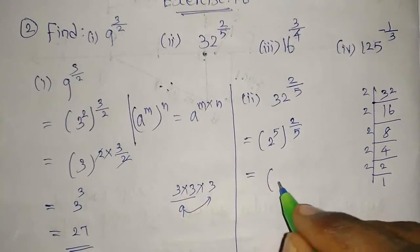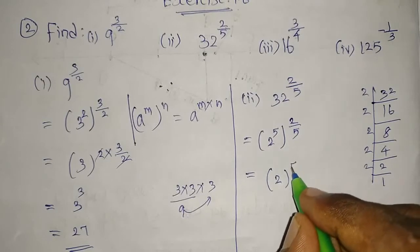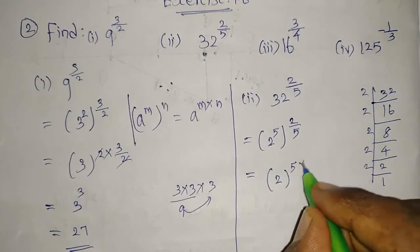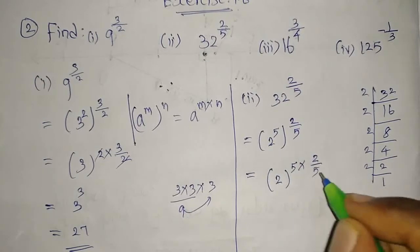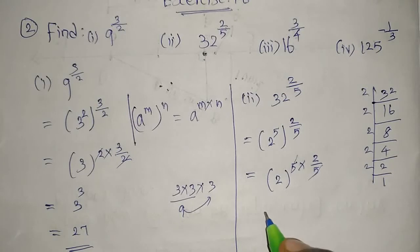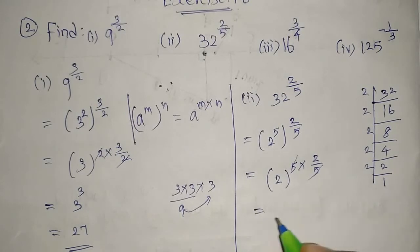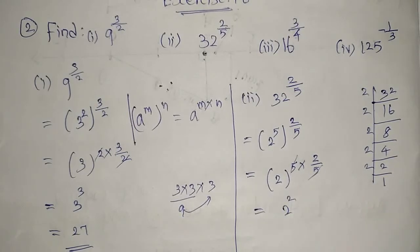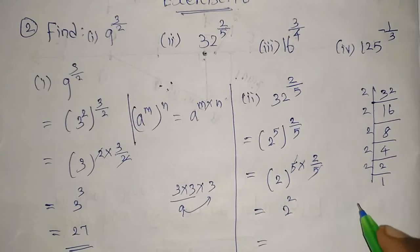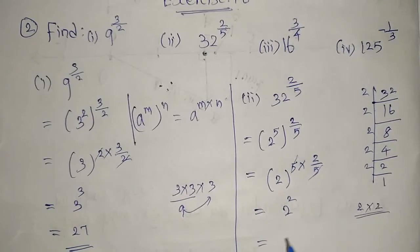Using the same formula, I get 2 whole power 5 multiplied by 2 by 5. The 5 and 5 cancel, leaving 2 power 2. 2 power 2 means 2 into 2, and 2 twos are 4. So 4 is the required answer for the second question.